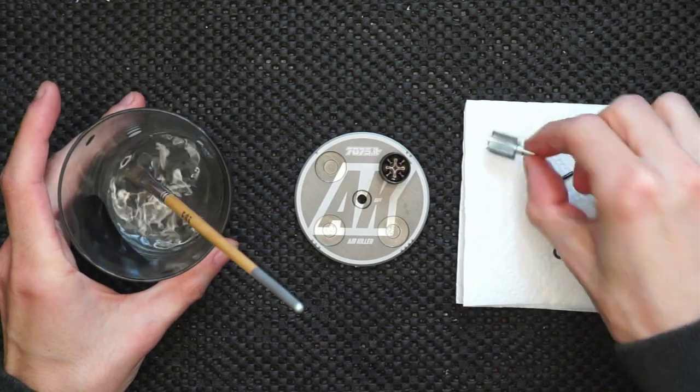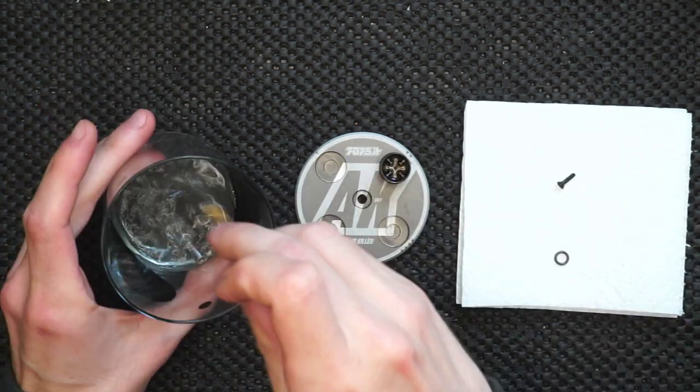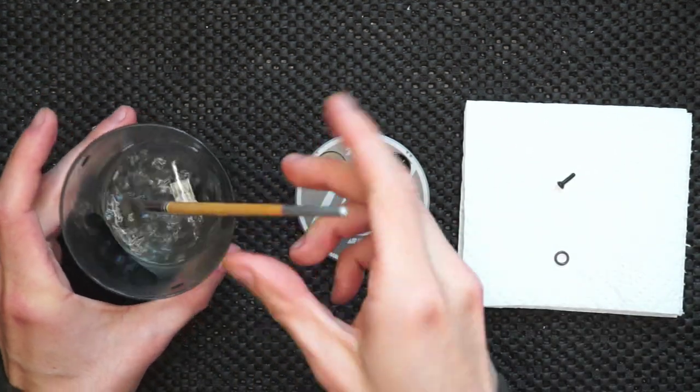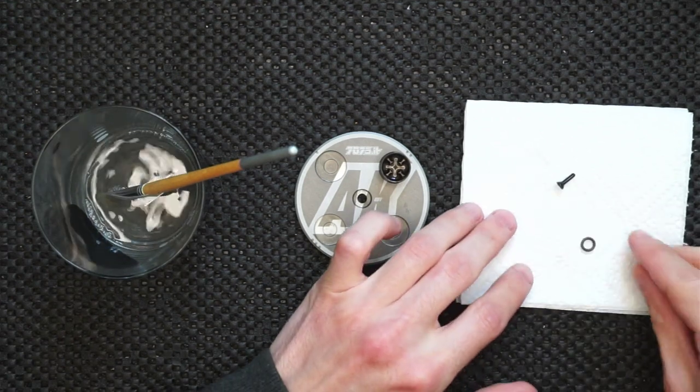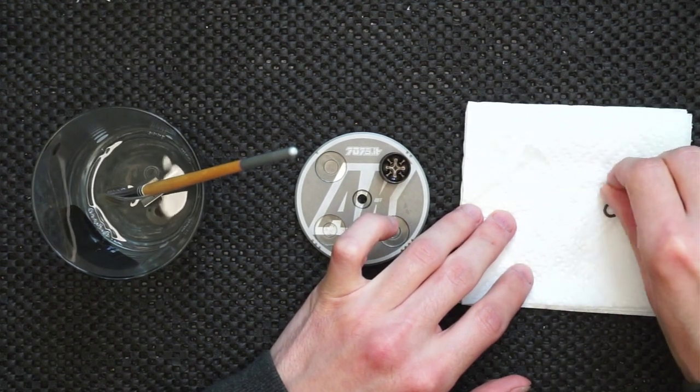Grab some brake cleaner and put everything in. Give it a good stir. For the o-ring and piston, give it a good rub on the tissue.